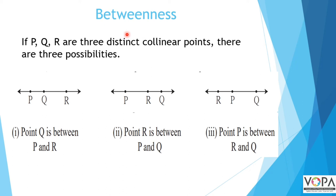The next topic is betweenness. If P, Q, R are three distinct collinear points, there are three possibilities: Q is in between P and R; R is in between P and Q; or P is in between R and Q. This concept is called betweenness. If a point lies between two others, all three are said to be collinear.